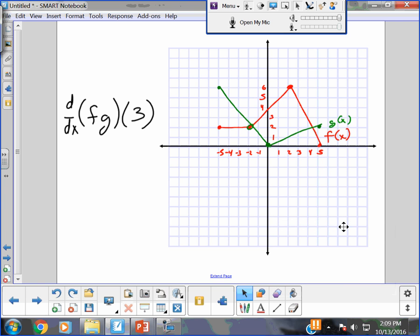Alright, so on this problem I have a graph of two functions, g of x and f of x. If you're not colorblind, g of x is green, the top curve, and f of x is the bottom curve, the red curve. And I want to find the derivative of the product of f of g at 3. Alright, well, first of all, you know what? We're going to have to do this first.